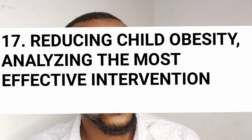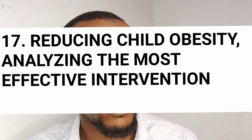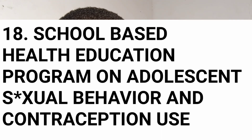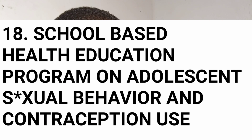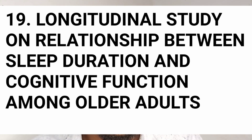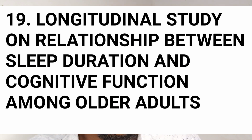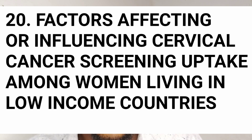Number seventeen: reducing child obesity — what is the most effective intervention in curbing child obesity? Number eighteen: school-based health education programs on adolescent sexual behaviour and contraception use — what impact do these programs have on adolescents? Number nineteen: a longitudinal study on the relationship between sleep duration and cognitive function among older adults — does the amount of time you spend sleeping affect cognitive function? Number twenty: factors affecting cervical cancer screening uptake among women in developing countries, where screening uptake is very low.